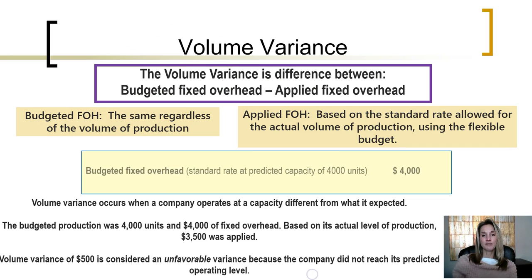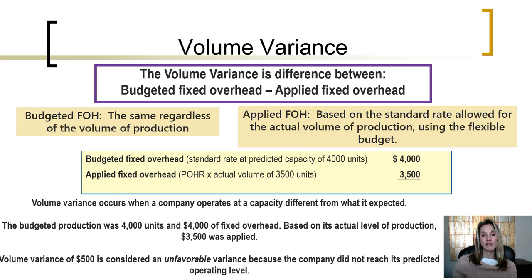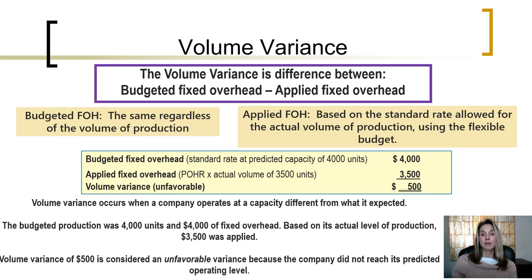The volume variance is the difference between budgeted fixed overhead and applied fixed overhead. Recall budgeted fixed overhead is the exact same regardless of the volume of production. The applied overhead is based on the standard rate allowed at the actual volume of production, which is really using the flexible budget. If the budgeted fixed overhead at a predicted capacity of 4,000 units produced is $4,000,